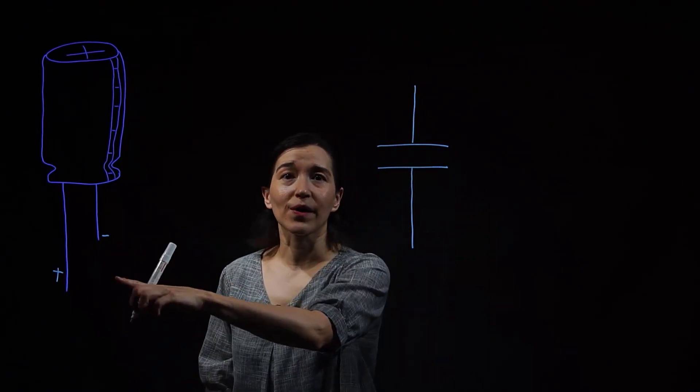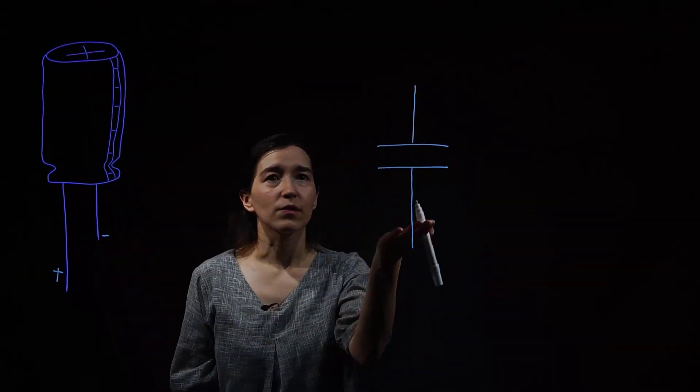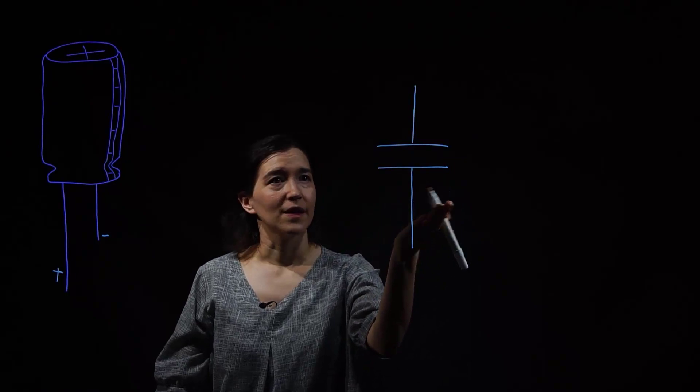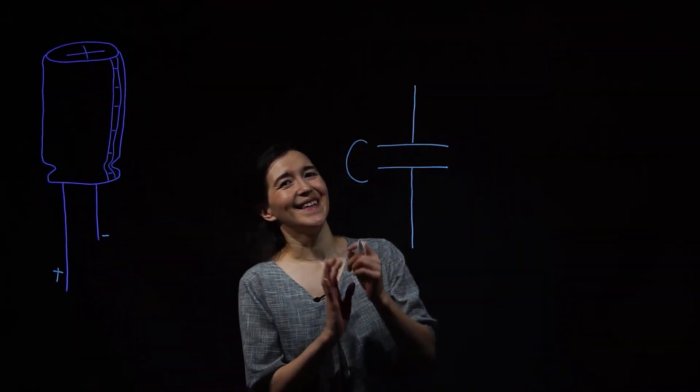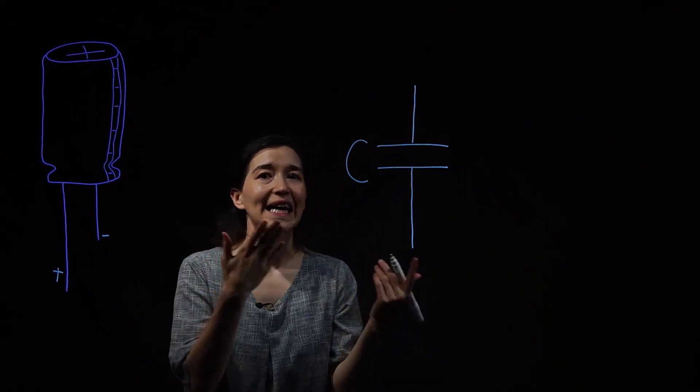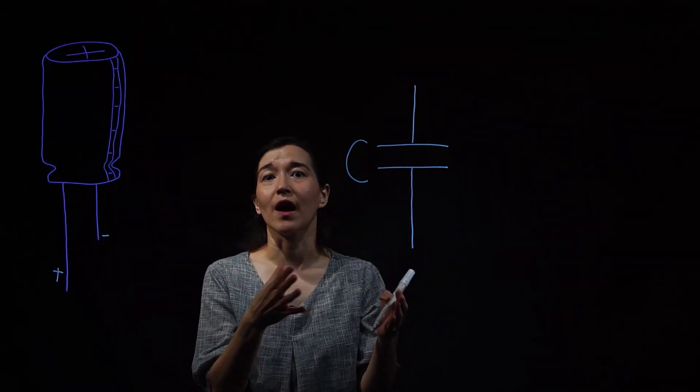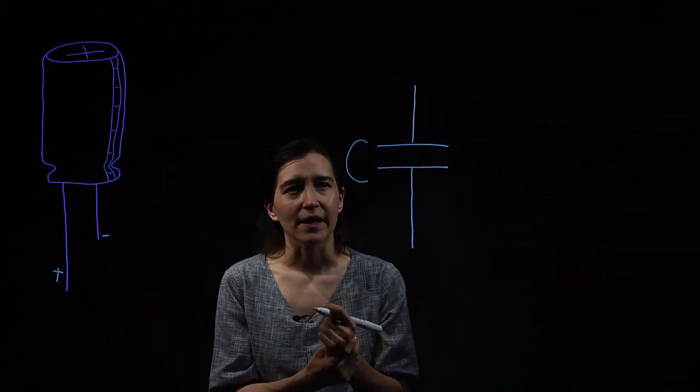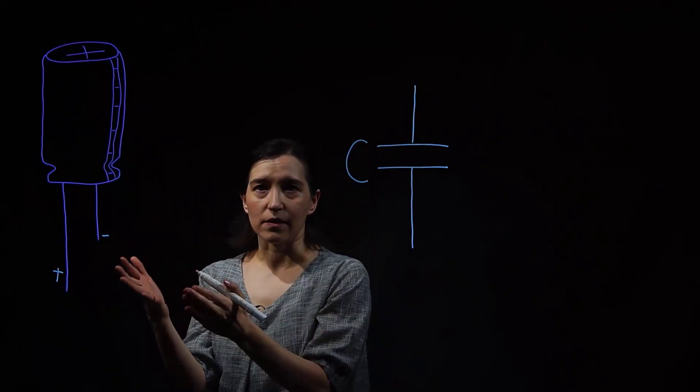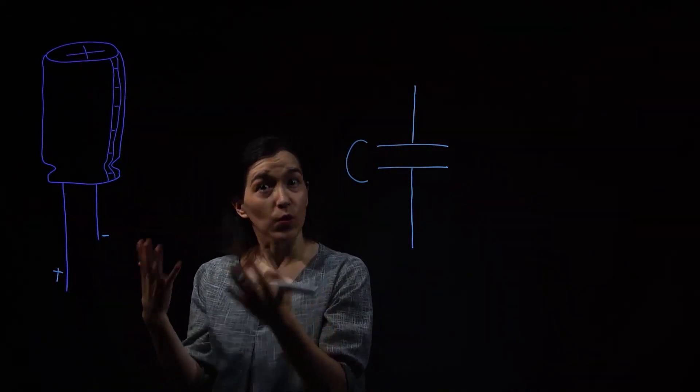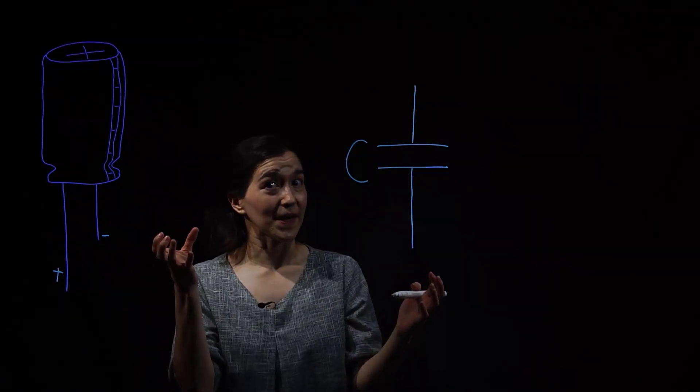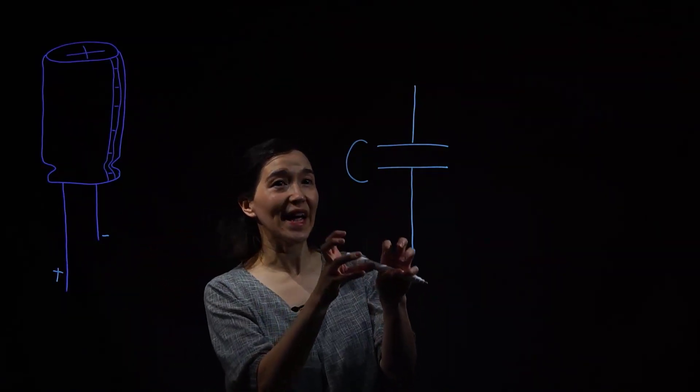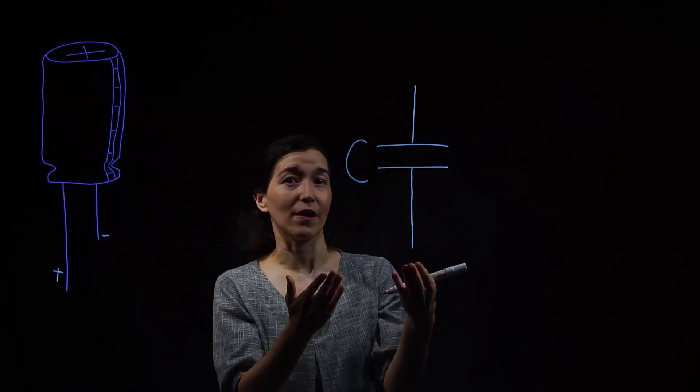If we want to model a capacitor, obviously we just draw this, and we have our capacitance value here, and we're done. Not quite. This is the idealized version of a capacitor. But when we look at a real capacitor, there is more to it. There are some things that we call parasitics, like a parasite. So things that take away from the ideal version of this capacitor.